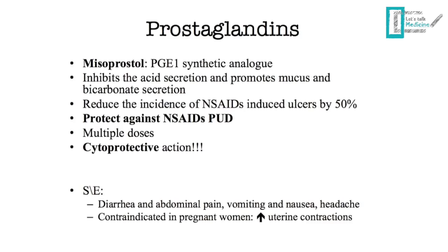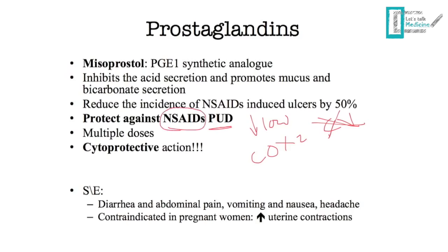Misoprostol is a prostaglandin E1 synthetic analog. Its most important feature is cytoprotective action, protecting against NSAID-induced peptic ulcer disease. For example, if a 65-year-old patient needs ibuprofen for joint pain, you can minimize NSAID dose, switch to a COX-2 inhibitor like celecoxib if there is no cardiovascular risk factor, or combine the NSAID with misoprostol as a cytoprotective drug if cardiovascular risk factors are present.